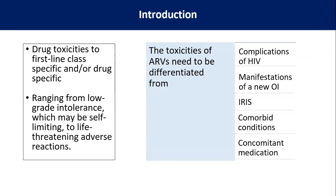Drug toxicity can be classified into class or drug-specific toxicities, and this can range from low-grade intolerance which is self-limiting to as high as life-threatening. We need to differentiate drug toxicity from complications of HIV, manifestation of a new opportunistic infection — for example, HIV-induced nephropathy — and from toxicities and manifestation of a new OI. Many times we find bicytopenia and we might wrongly attribute it to a drug, so we need to differentiate from OI.